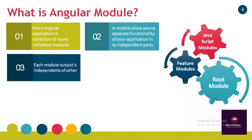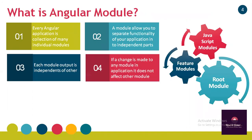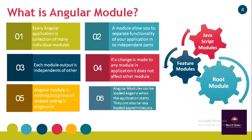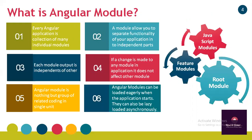Since modules are independent, the output of each module is separate and independent of another module. If there is a change in any one module, it does not affect the other modules inside the application. They are an independent part — a group of similar code — making related code a single unit. Angular modules can be loaded eagerly when an application starts.